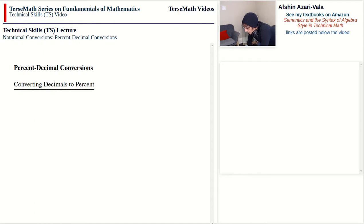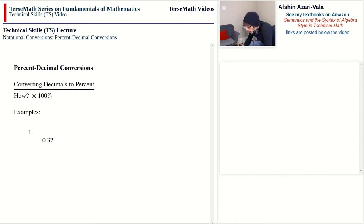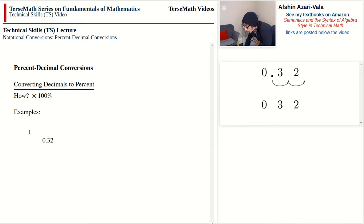Now we go the other way: converting decimals to percentage. We multiply by 100, and because we have decimals we do this by moving the decimal point forward over two digits. For example, 0.32 — or 32 hundredths — multiplied by 100: the decimal point moves forward two digits and we get 32. We can drop the trailing point and zero to get 32%.